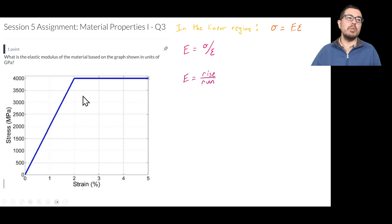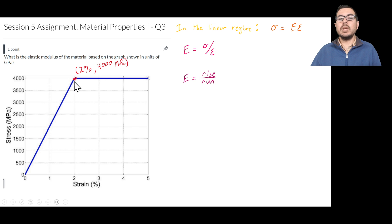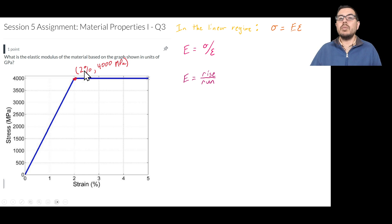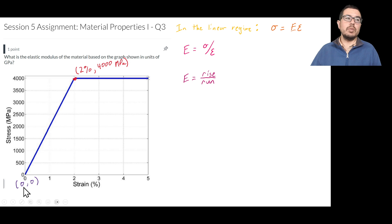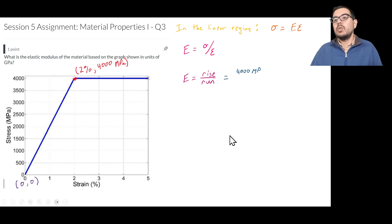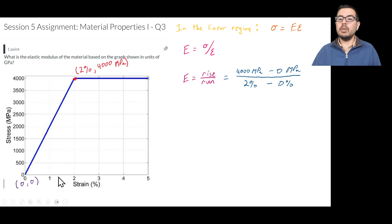To calculate the slope, we need to find a couple of points to determine the rise and the run. A good choice is the yield strength point where the material transitions from elastic to plastic — as long as the elastic regime looks linear. So we write down (2%, 4000 MPa) and use the origin (0%, 0 MPa), giving us: 4000 MPa minus 0 MPa, all over 2% minus 0%.